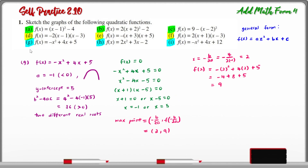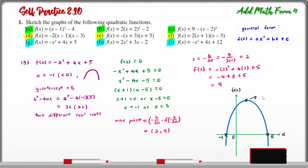With all this information, we can now sketch the graph for question G. The roots are at x = -1 and x = 5. The maximum point has coordinates (2, 9). The axis of symmetry is x = 2, and the y-intercept is 5. Using the same method, you can find the information needed to sketch the graphs for questions H and I.